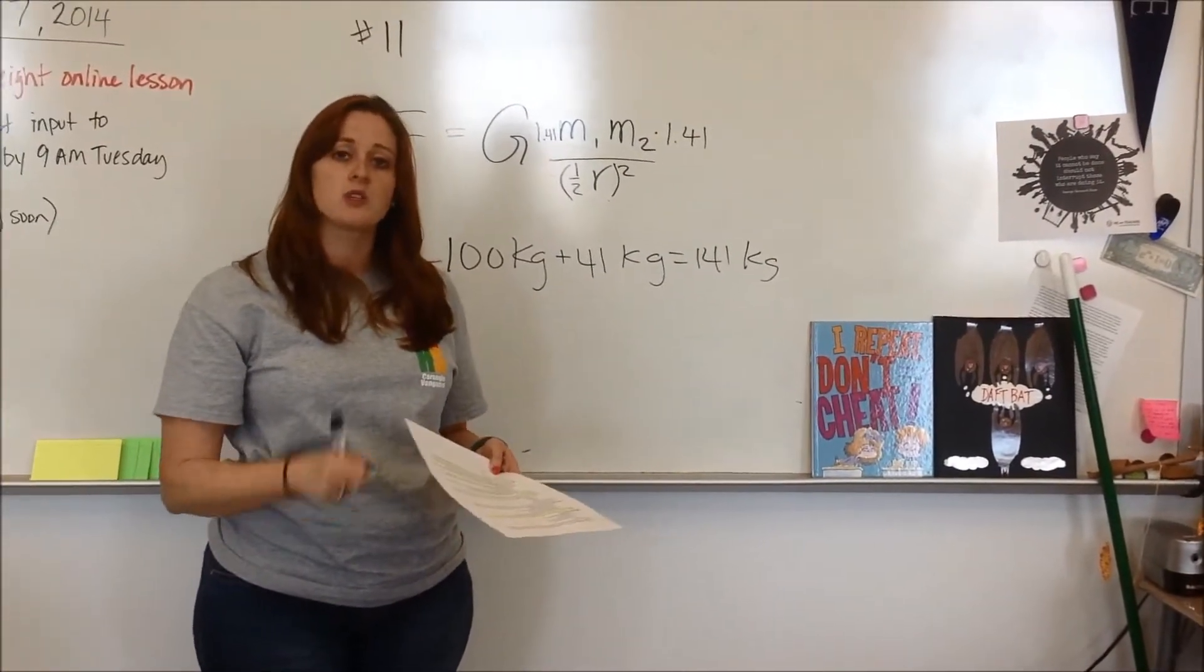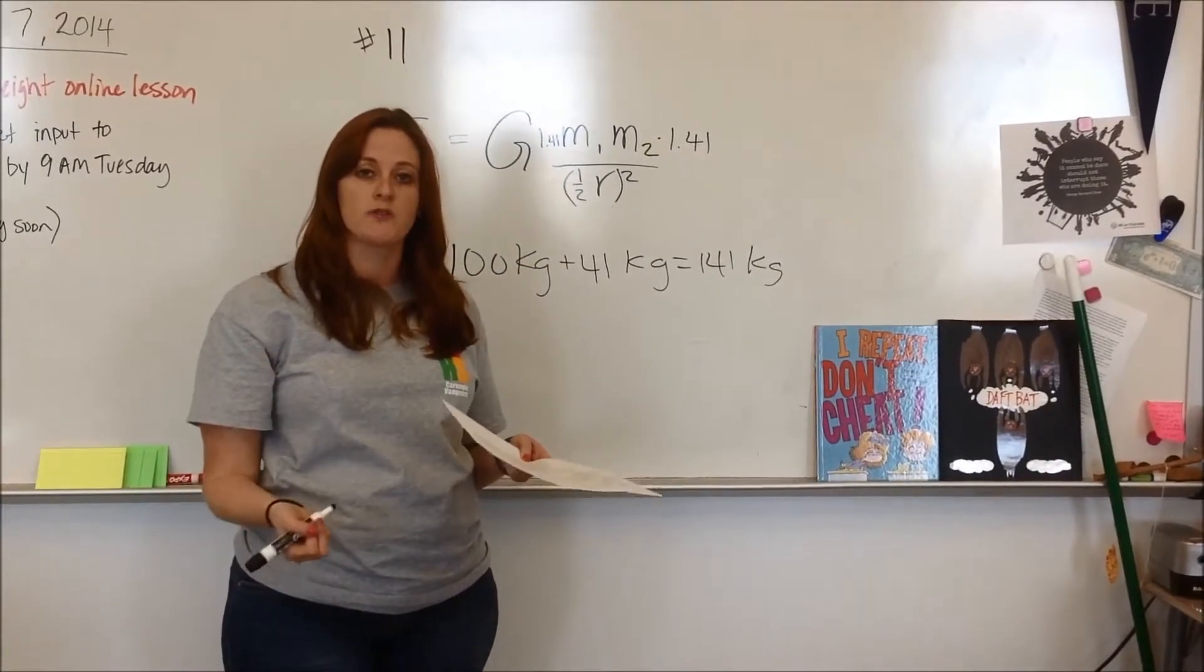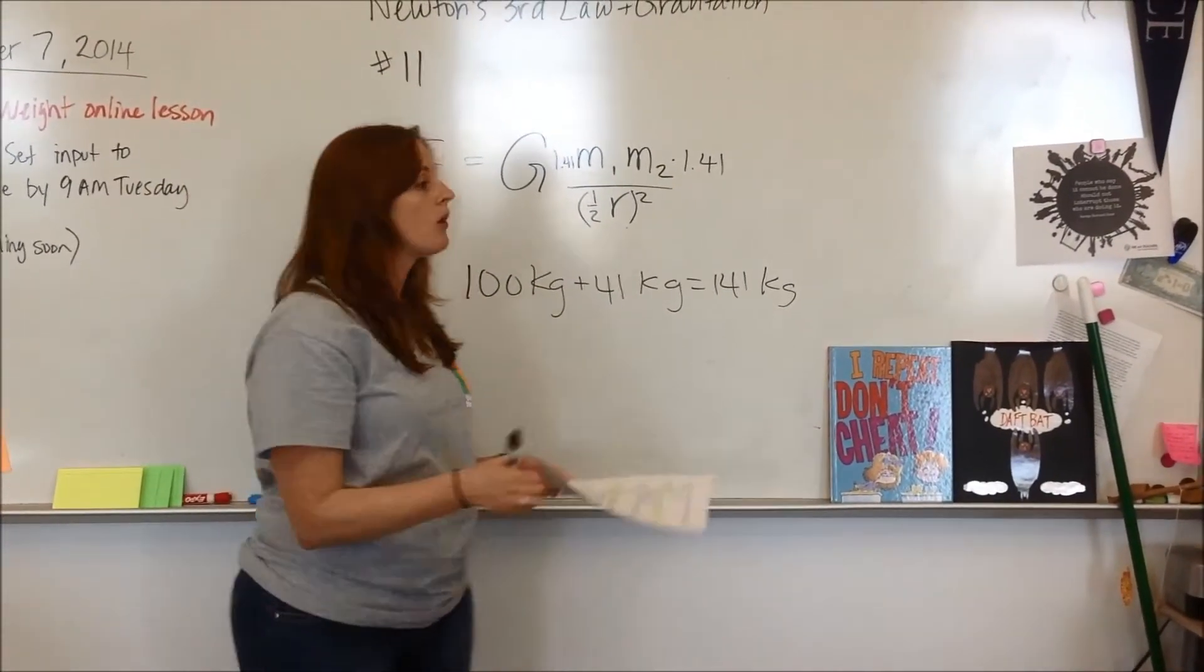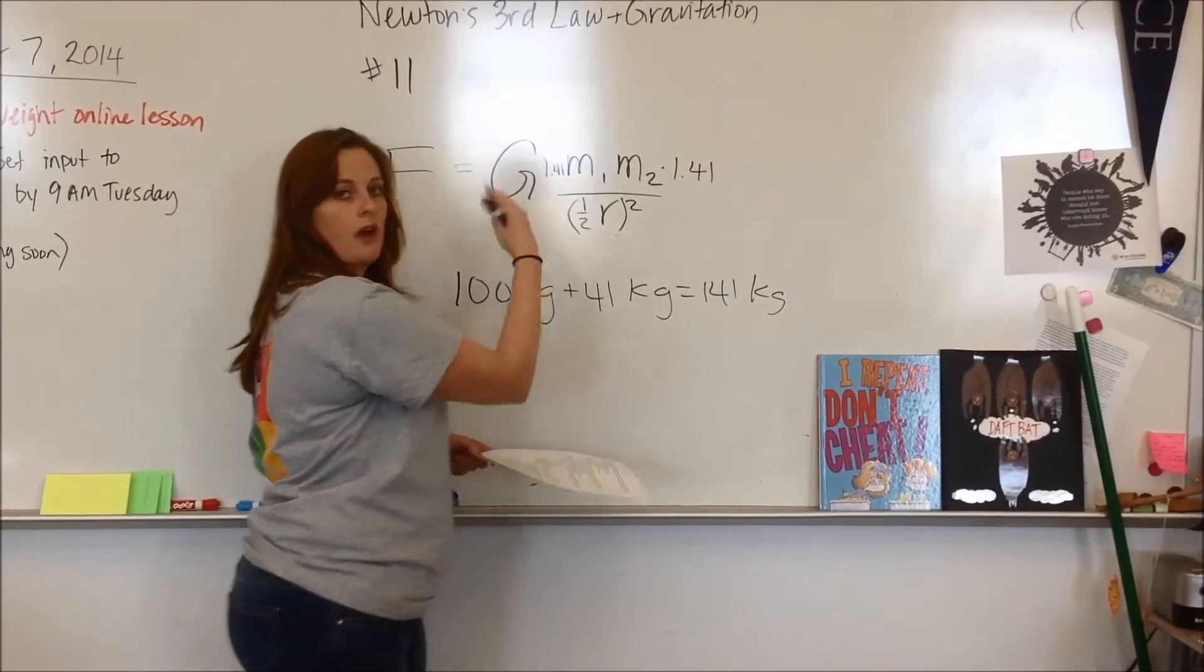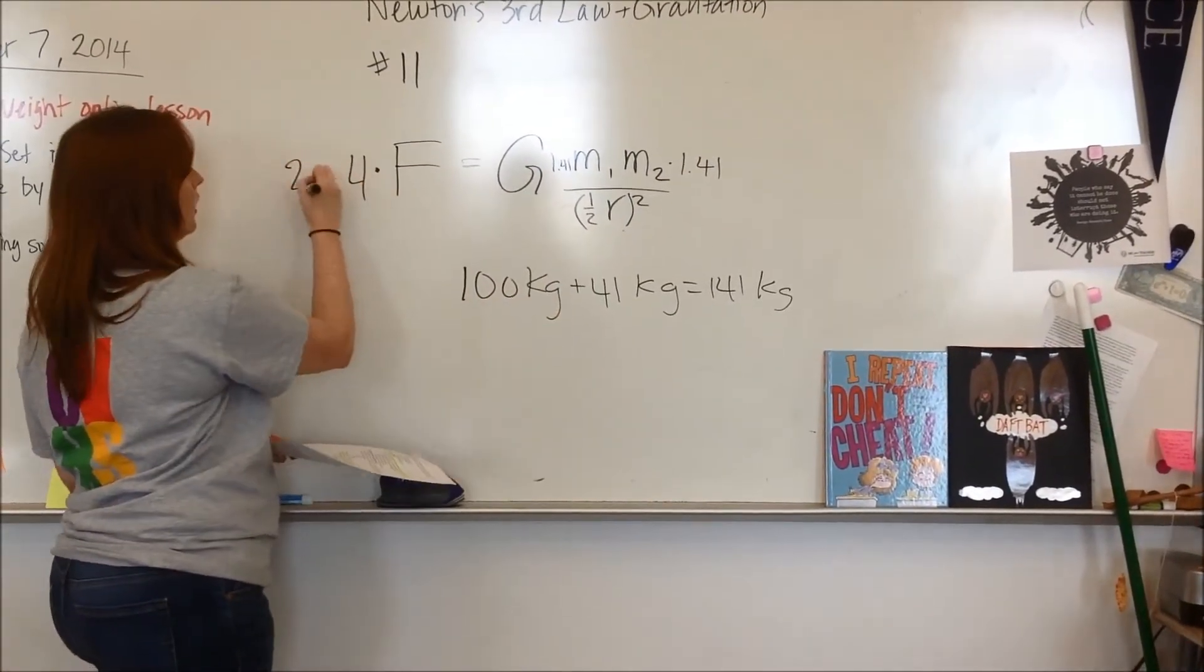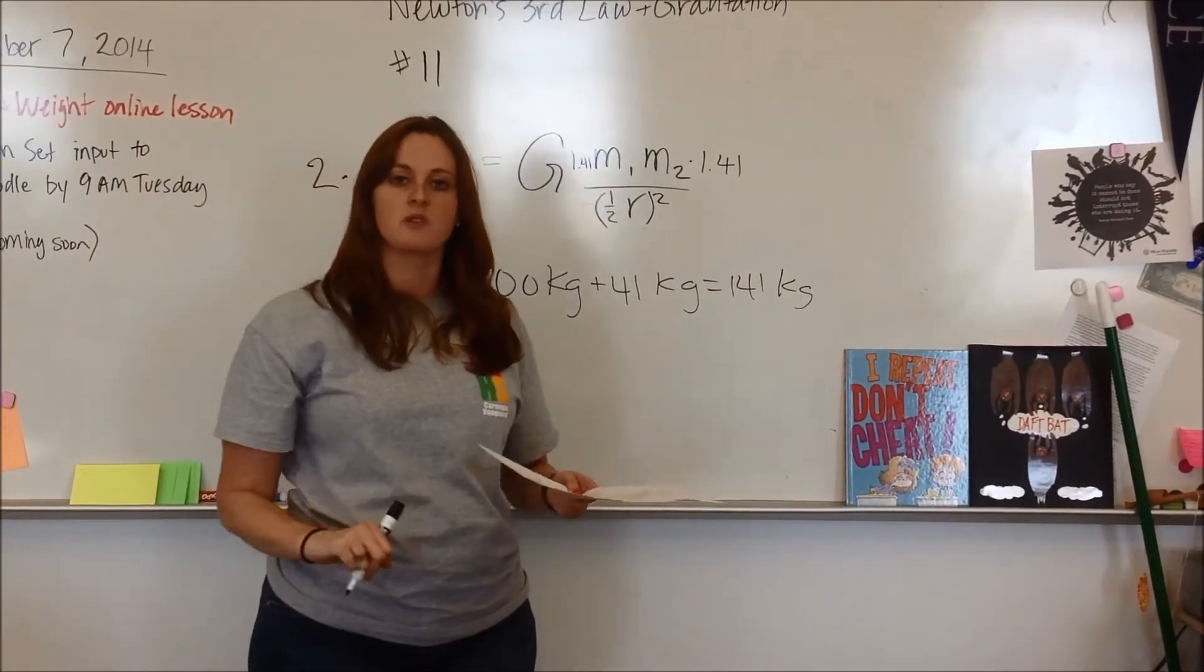They picked 41% because 1.41 is the square root of 2, approximately. So if I have the square root of 2 times the square root of 2, I get 2. In this case, I get 8 times the original force.